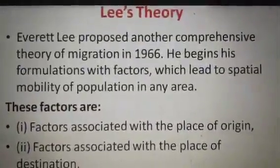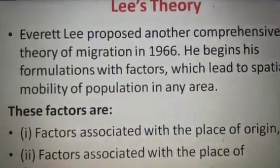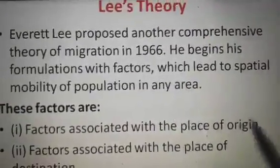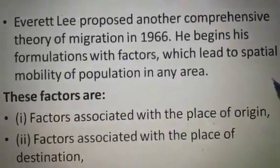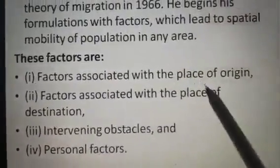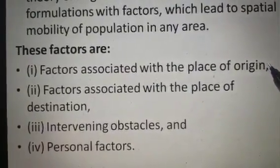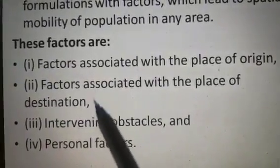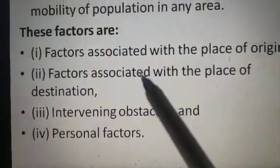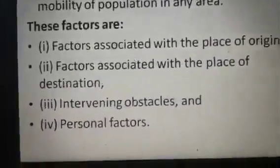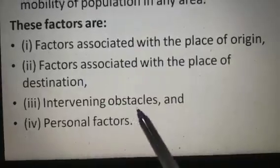Now, the full name of Lee's theory: Everett Lee proposed a comprehensive theory of migration in 1966. He begins his formulation with factors which lead to spatial mobility of population. These factors are: factors associated with the place of origin — from where people are moving; factors associated with the place of destination — where people are moving to, called place B; intervening obstacles; and personal factors.